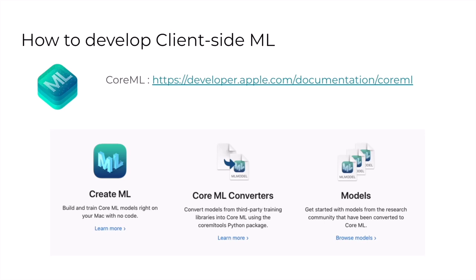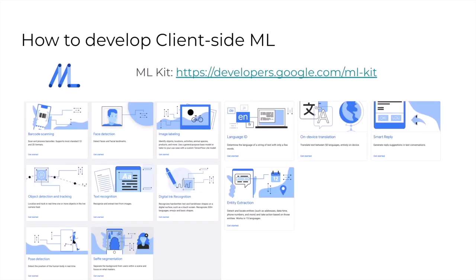Recently, many tools, SDKs, and libraries for client-side ML have been developed. When you create an application for Apple devices, you can use Core ML. In this framework, you can create an ML model on your Mac and convert it to the mobile-available format easily, and the model can be used in Swift code. When you create a cross-platform application, ML Kit is useful. In its documentation, you can see many examples of client-side ML applications such as barcode scanning, face detection, OCR, translation, and more.